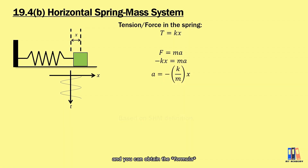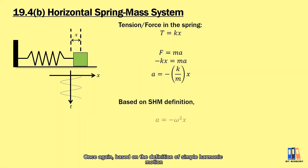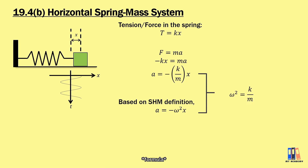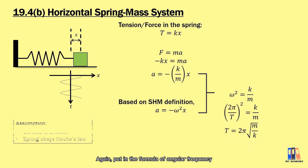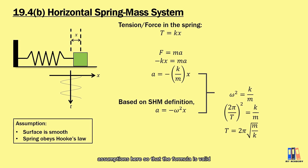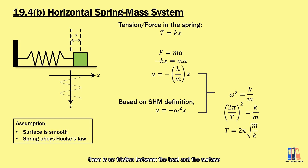Rearranging gives acceleration = −(k/m)·x. Comparing with the SHM definition a = −ω²x, we obtain ω² = k/m. Substituting ω = 2π/T and rearranging gives the period T = 2π√(m/k). Two important assumptions apply: the surface must be smooth (no friction between the bob and surface), and the spring must obey Hooke's law.